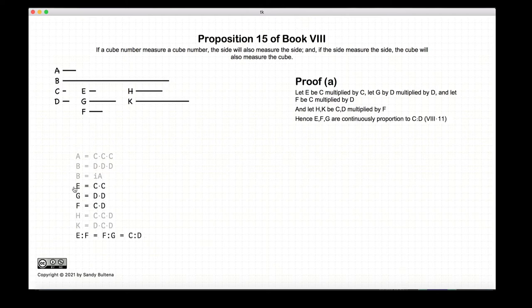So now if we look at e, f, and g, they are in continuous proportions which is going to be equal to c to d. This is based on Proposition 11 of Book 8, although it's fairly obvious just by looking at the symbols.